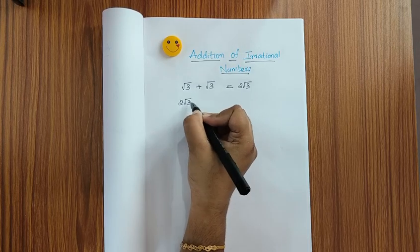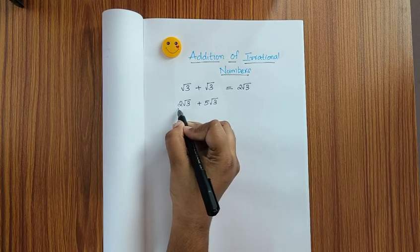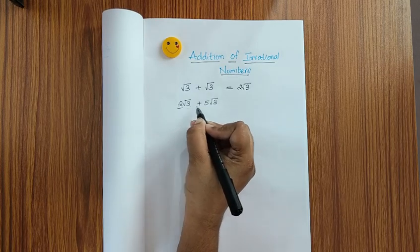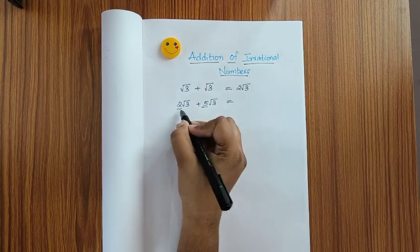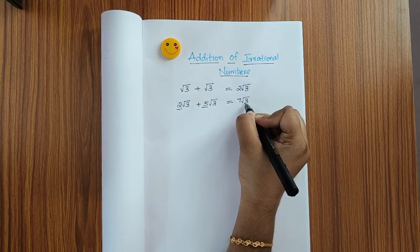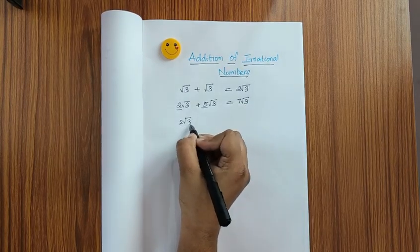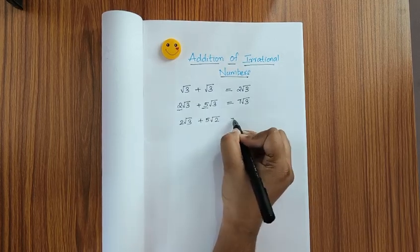2 root 3 plus 5 root 3? Here 2 root 3's are added to 5 root 3's, so you will get 2 plus 5, which is 7 root 3. Now what about 2 root 3 plus 5 root 2? What will be the answer here? Before finding out this answer, let me show you something else.